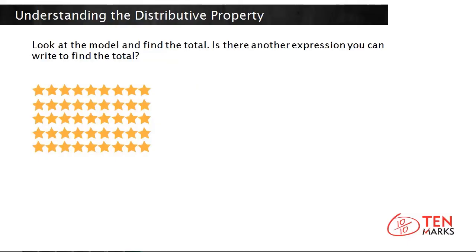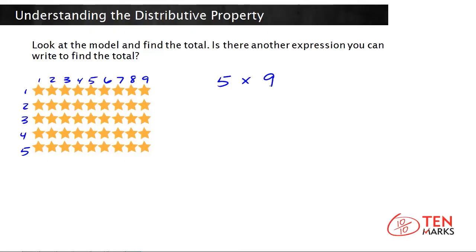This model is an array with an equal number in each row. To find the total, you just multiply the number of rows by the number in each row. There are five rows and nine stars in each row. The expression to find the total is five times nine, and five times nine equals forty-five.